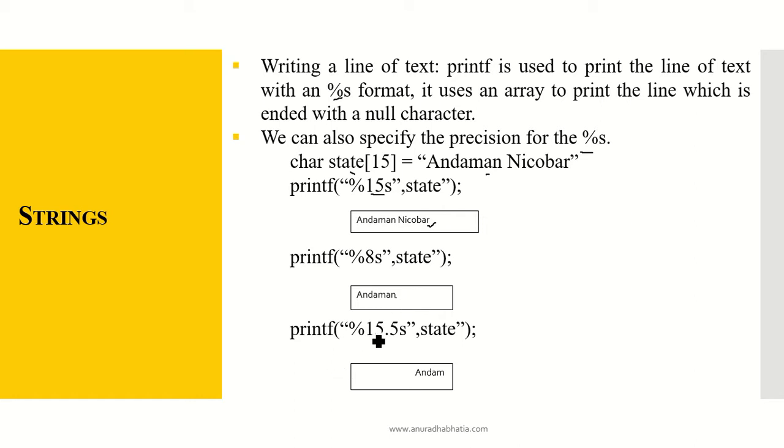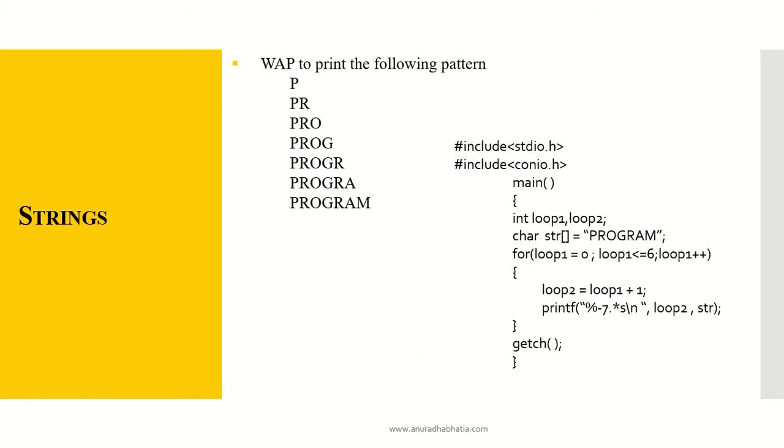Now when I say printf %15.5s, so what happens? As the first 5 characters are taken and printed. So this is how my output will be there. So .5 if you see specifies that out of the 15 characters I can print the 5 characters. So this 5 can be varying for how many characters I need to print.